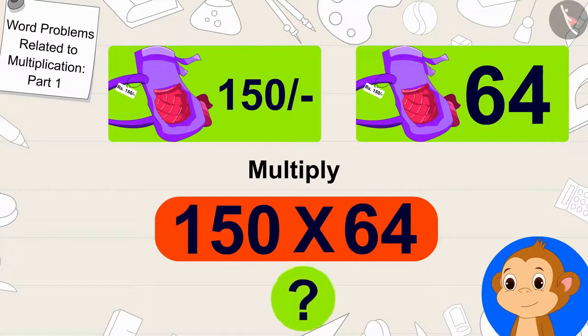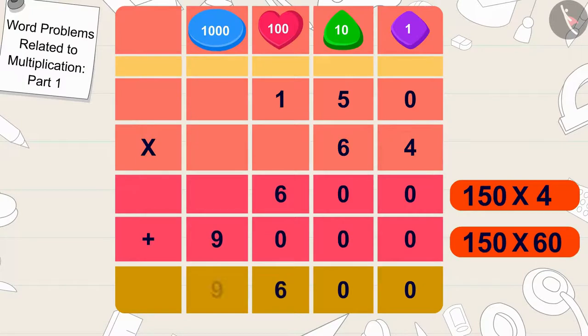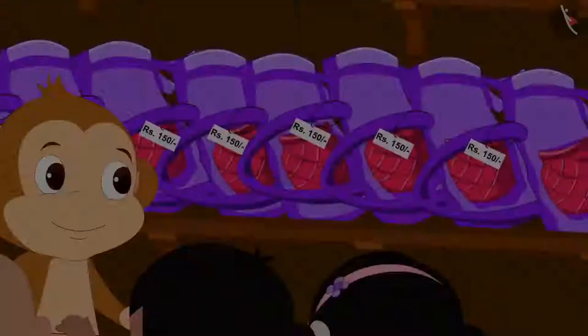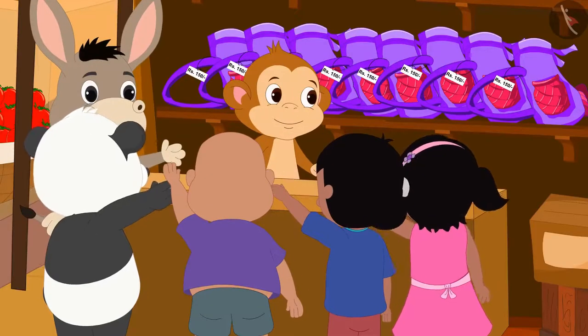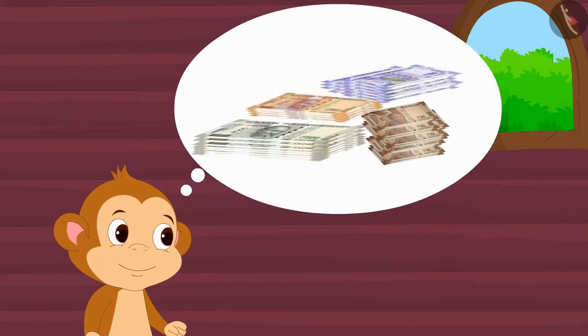Children, can you tell what the answer will be? If you want, you can stop the video and find the answer. Well done children, your answer is absolutely right. Babban will earn 9,600 rupees by selling 64 bags of 150 rupees. In eight weeks, Babban made a lot of profit from his shop and after earning a lot of money, he bought a new house for himself.